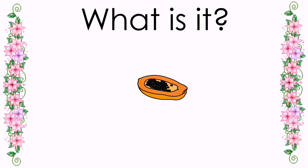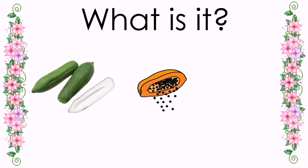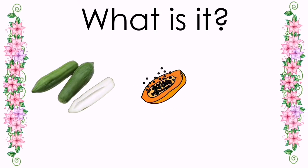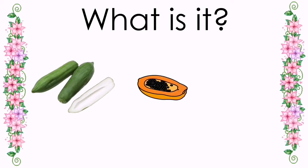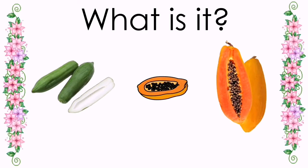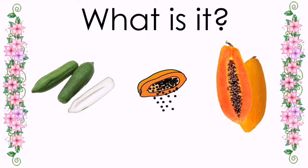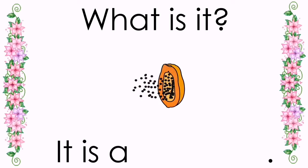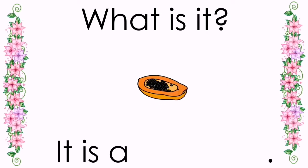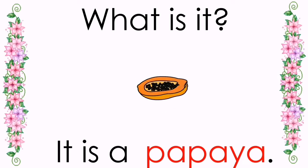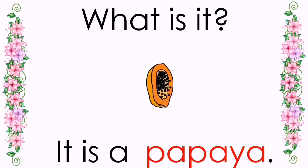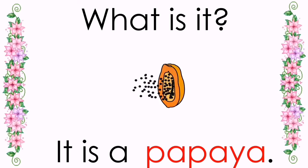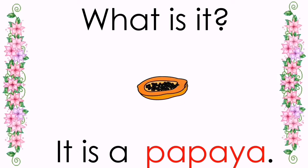Next, what is it? It is a good source of vitamin C and can brighten your skin. It is green or orange outside. Perfect! It is a papaya. Again, it is a papaya.